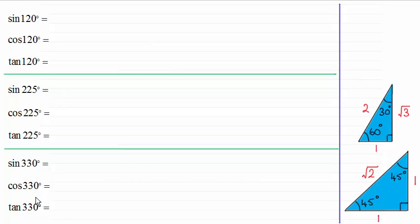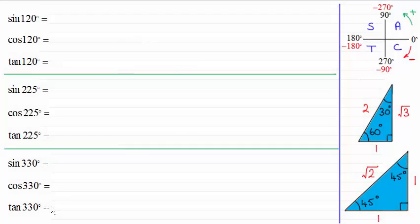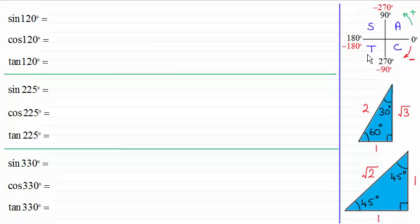We're going to look at how we work out the sine, cosine and tangent of not only these angles but also negative angles. To do this, it's easier if you're familiar with the quadrant diagram, or CAST diagram as some people call it, where turning anti-clockwise gives positive angles from 0 up to 360 degrees, and clockwise is the negative sense. All trig ratios are positive in the first quadrant; sine is positive in the second quadrant; tan is positive in the third quadrant; and cosine is positive in the fourth quadrant.